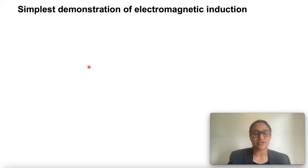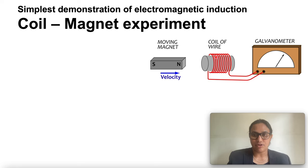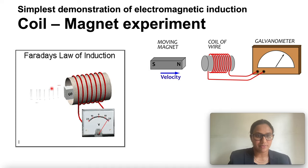This is a demonstration of electromagnetic induction, the coil-magnet experiment. What do you need here? You need a magnet and you need a coil of wire. Also for detecting current, you need a galvanometer. What you need to do here is take a strong bar magnet and move its north pole towards the coil. Observe the galvanometer. What happens? This is the experiment.